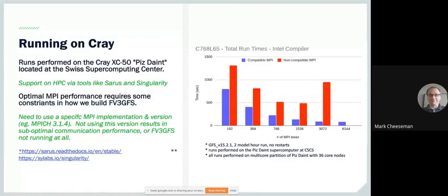One of the platforms we're targeting is the Cray supercomputer at the Swiss Supercomputing Center. They have tools to deploy Docker containers: Ceres (the successor to Shifter) and Singularity. There is a gotcha when you want the best MPI performance — you have a restriction on MPI version and type. For the Cray, you have to use an MPICH implementation, limited to a certain version. For CSCS, that's the 3.1 series of MPICH. If you don't use the proper MPI, it will affect your performance.